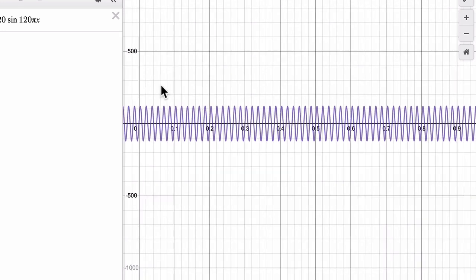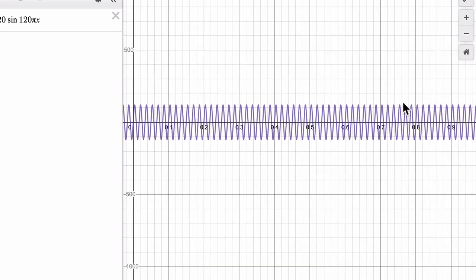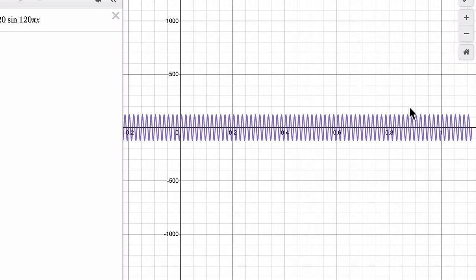That looks a little bit better. So you can see there are 120 cycles, a bunch of cycles here. Oh, sorry. There are 60 cycles here within one second. That's what it looks like.